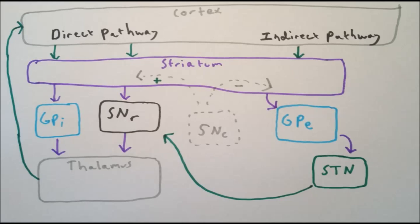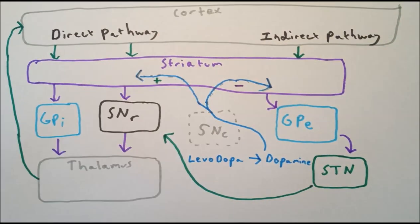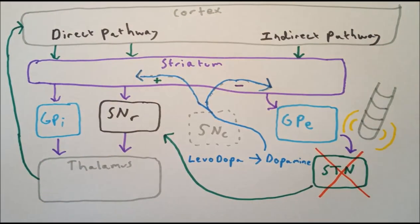This leads to the characteristic slow movements and rigidity of Parkinson's disease. The model can also help explain the treatments of Parkinson's disease. The main drug treatment is levodopa, a chemical that can be converted to dopamine in the brain, which can act to restore the balance between the direct and indirect pathways. If drug treatments fail, a further option is deep brain stimulation, where an electrode is inserted into the subthalamic nucleus. When the electrode is turned on, it creates an electrical field which prevents nearby neurons from firing, removing the excessive inhibition of the thalamus from the indirect pathway.